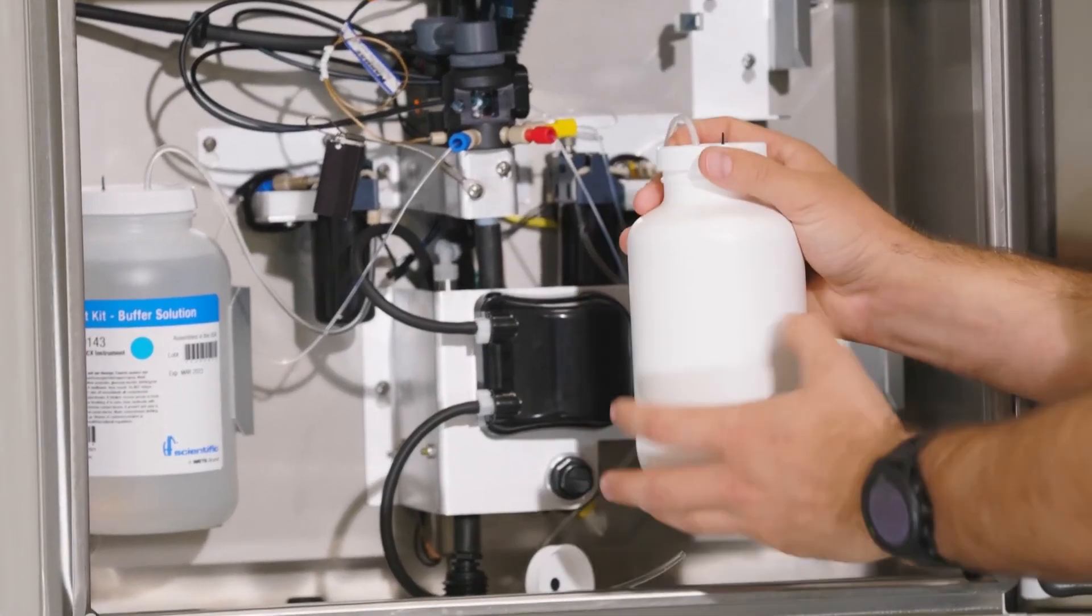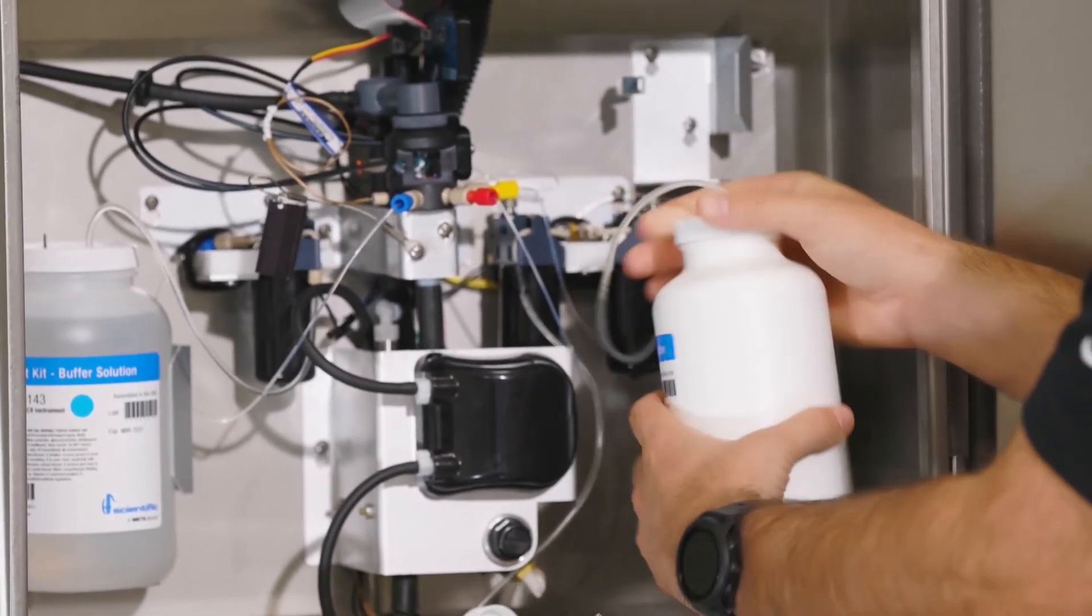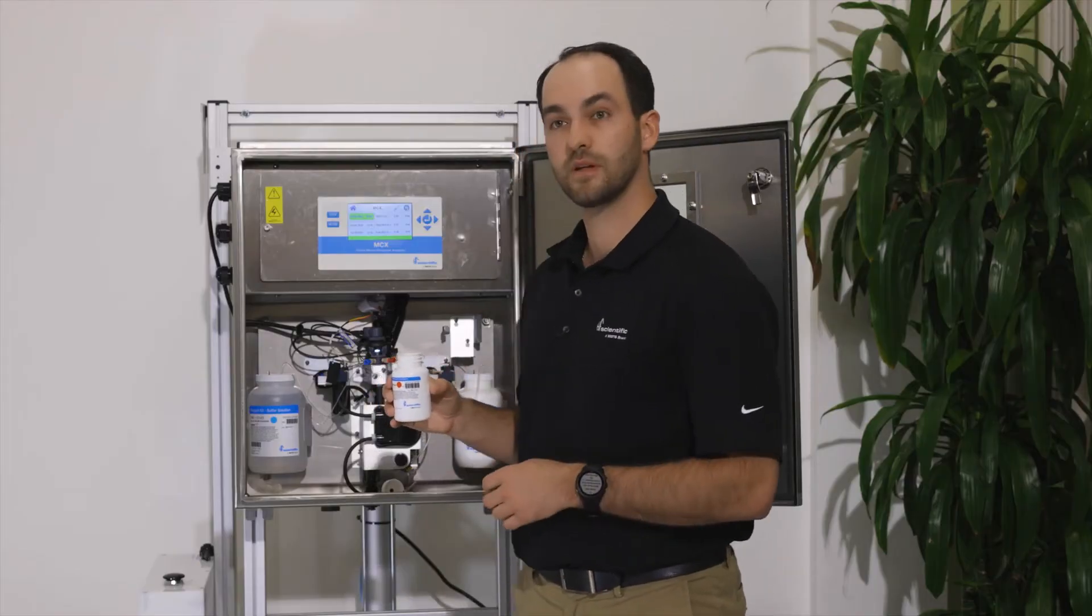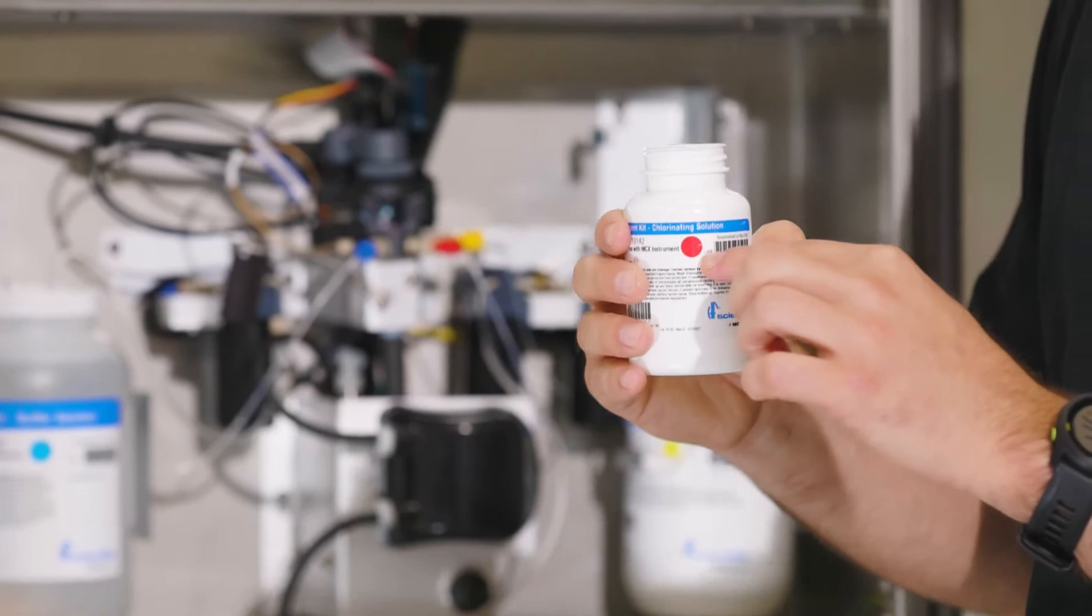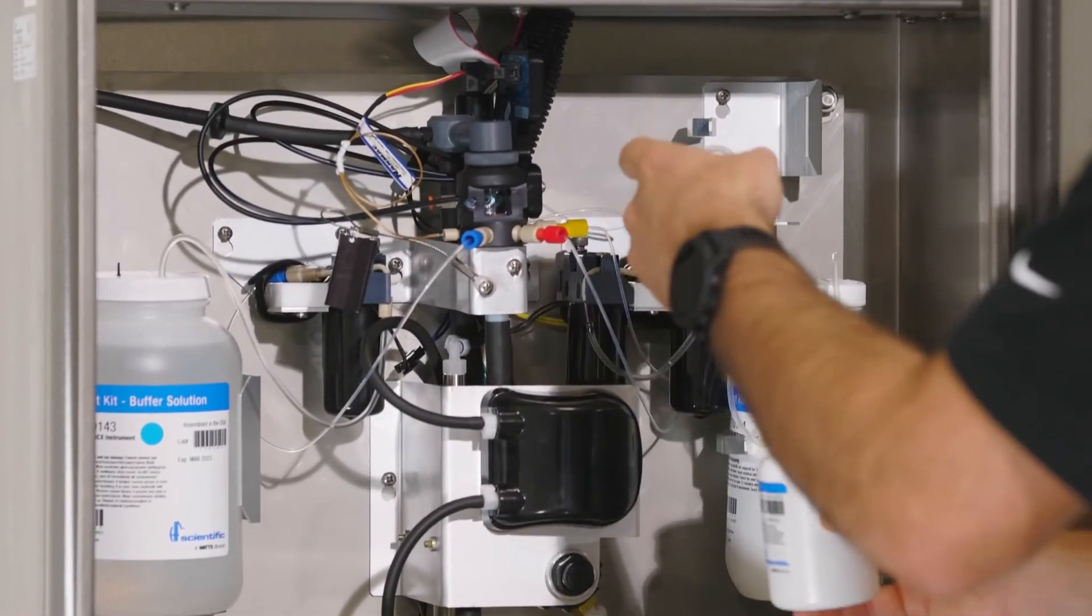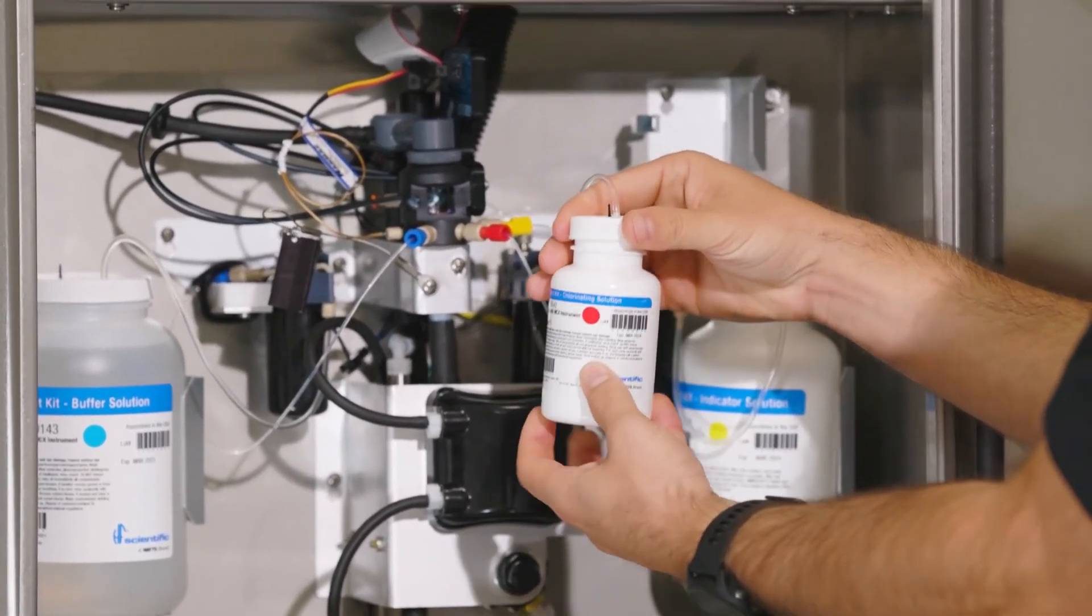Again, hold the cap and twist the bottle into place. The last reagent we'll put in is our chlorinating solution. Again, the red dot to the red plastic. Hold the cap and twist the bottle into place.